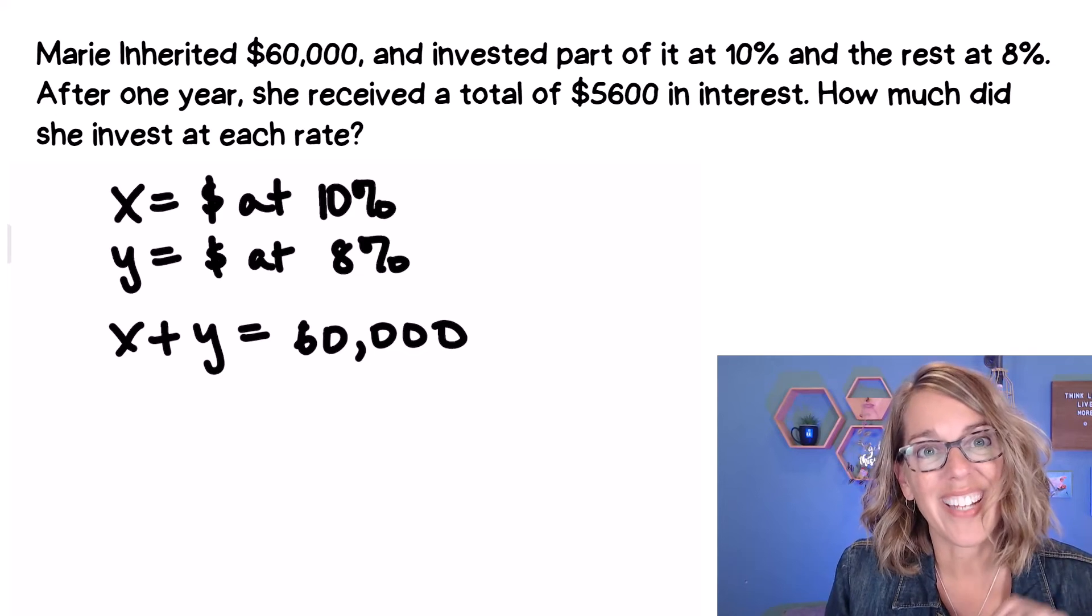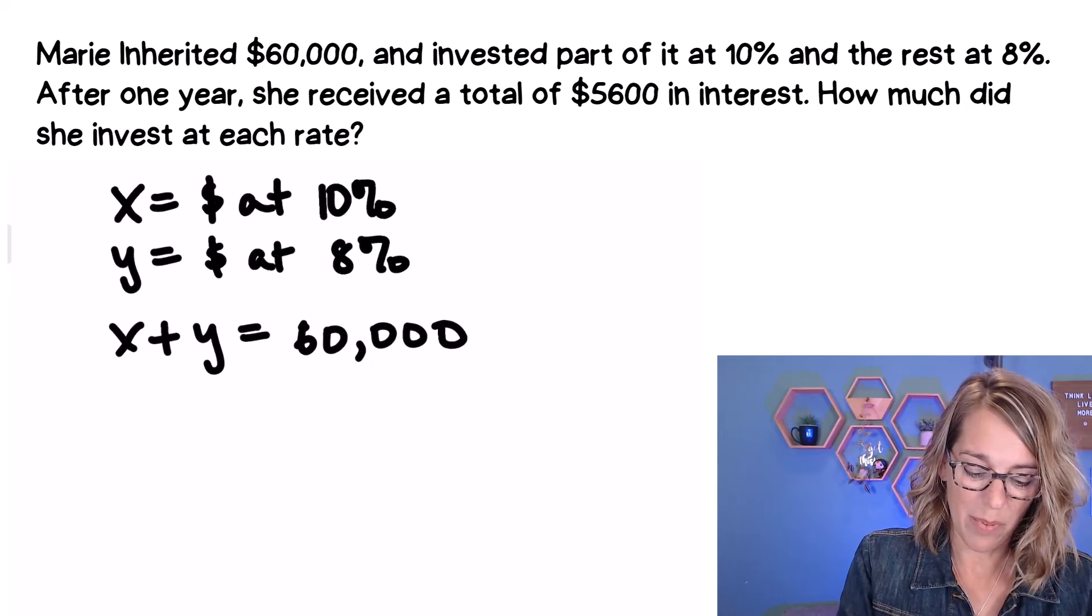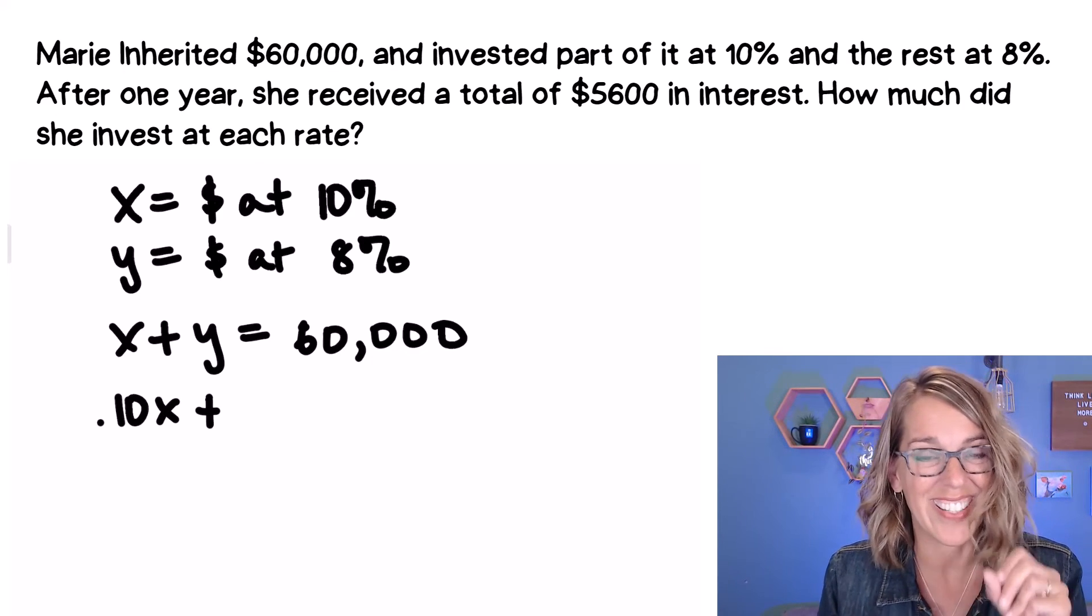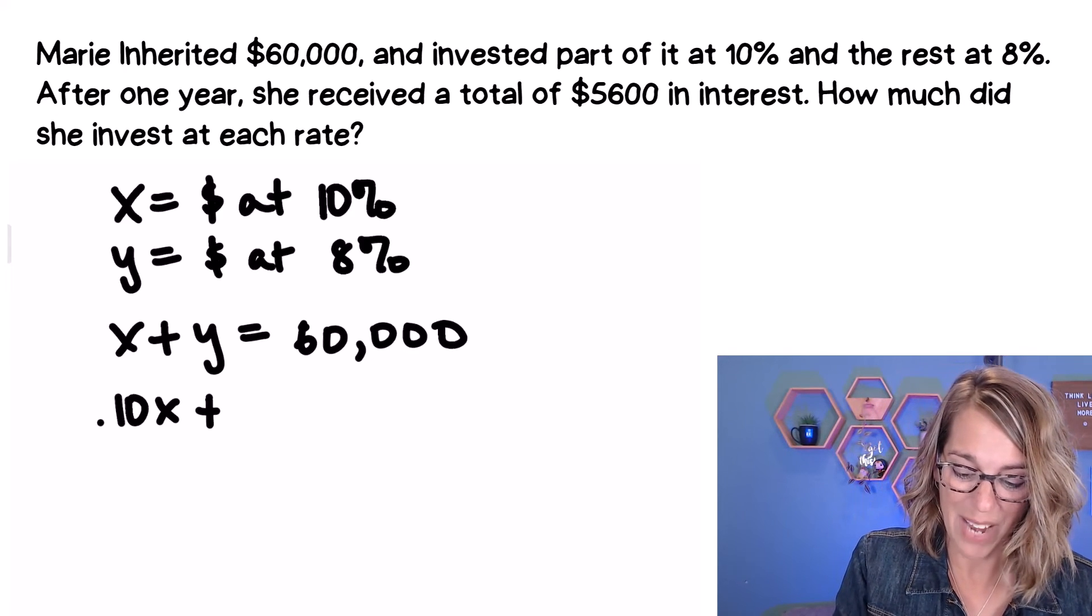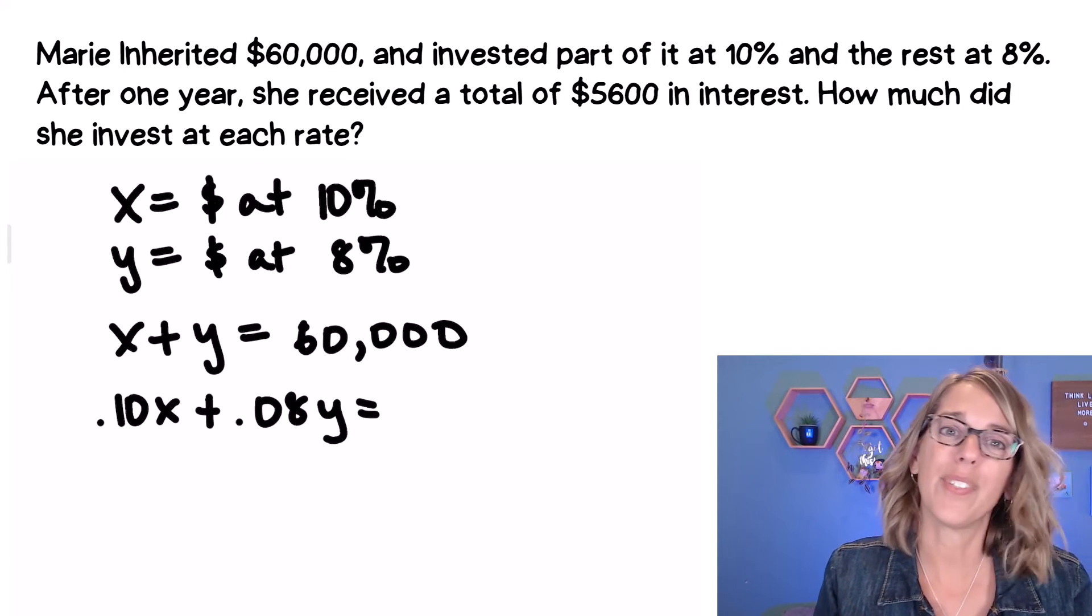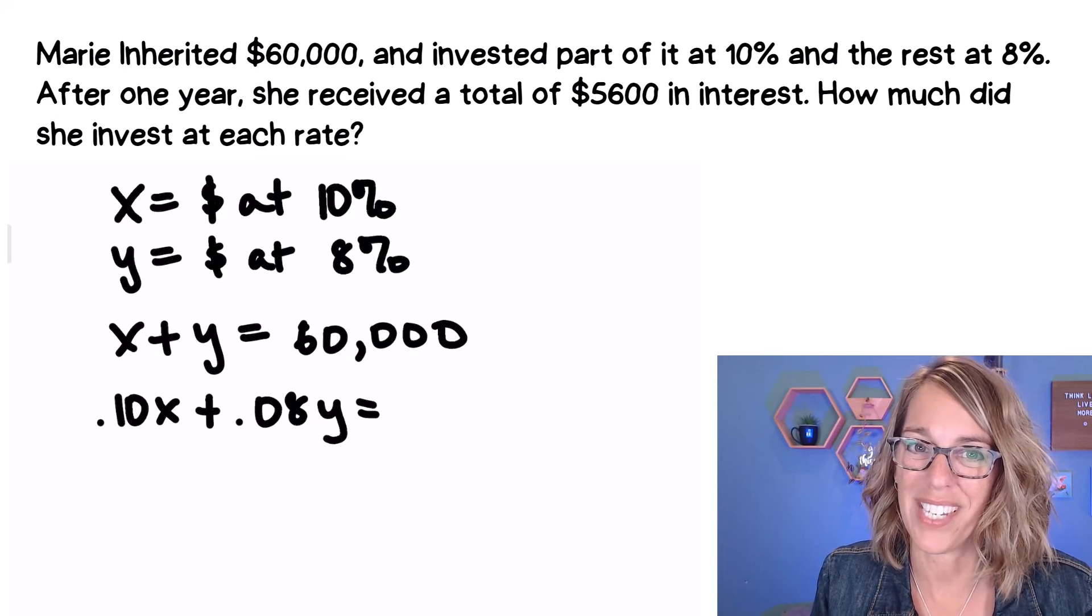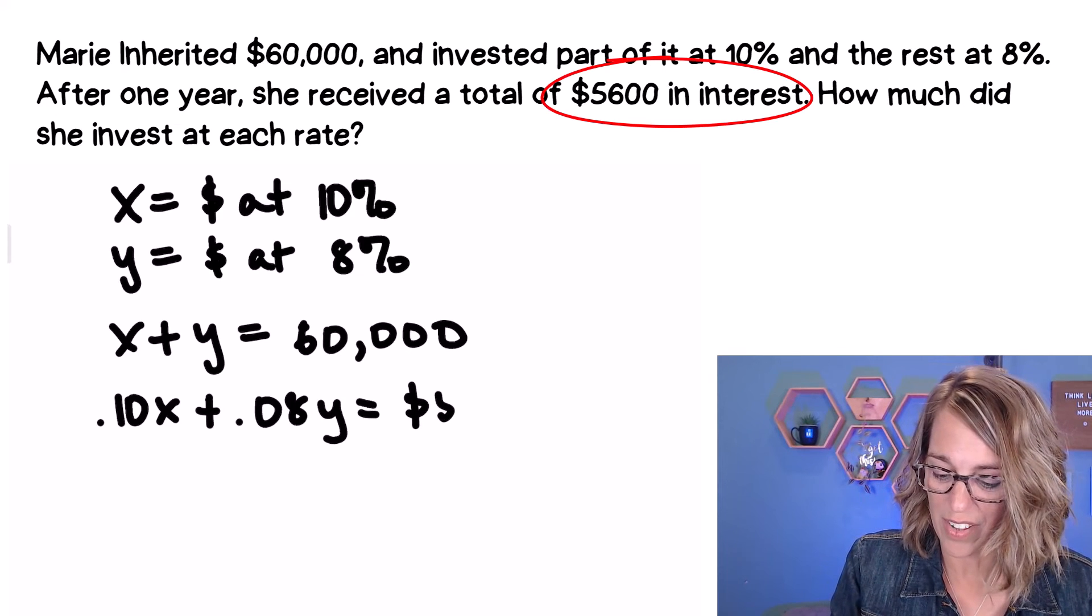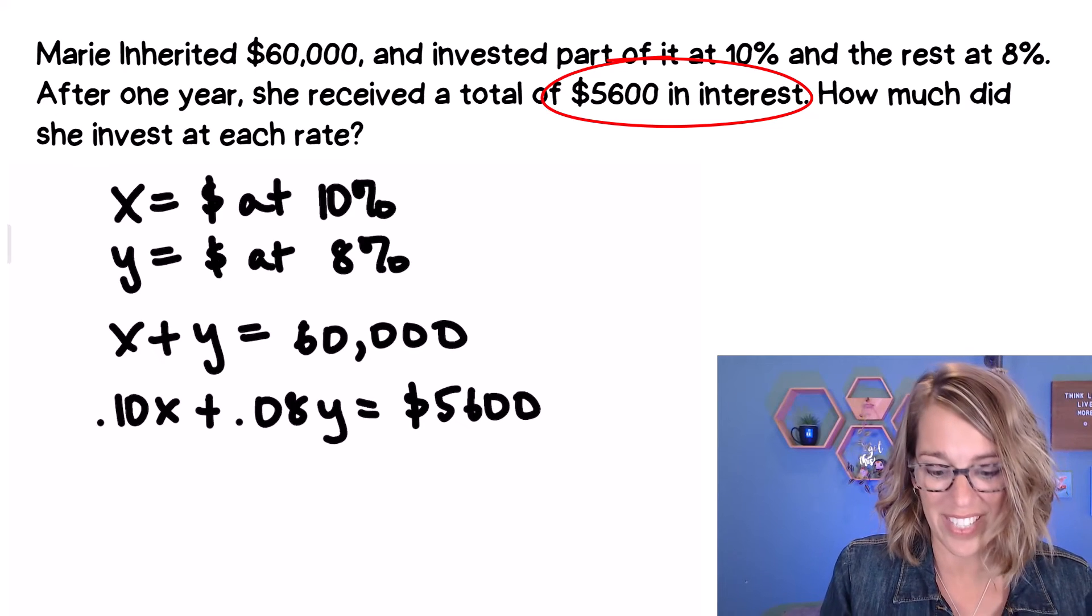Next, we need that percent times amount, starting with the 10%. So that 10% or 0.10 is times X, that's going to give me the interest in the X account. And then I've got 8%. 8% is 0.08 times Y is equal to, it would be percent times amount that computes interest, but they already gave me the interest. So I just need the $5,600 on the other side. It's the only thing that's tricky about these interest problems.